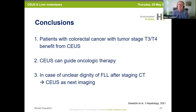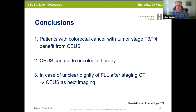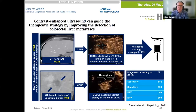The conclusions of the study: patients with colorectal cancer with tumor stage T3-T4 benefit from CEUS. CEUS can guide oncologic therapy. In the case of unclear dignity of focal liver lesions after staging CT, we propose CEUS as the next imaging step. In our published study, a hemangioma misdiagnosed by CT as metastasis was correctly identified by CEUS washout pattern, and a hypodense liver lesion of uncertain dignity on CT was correctly diagnosed as hemangioma by CEUS.